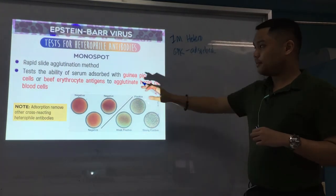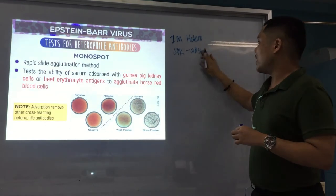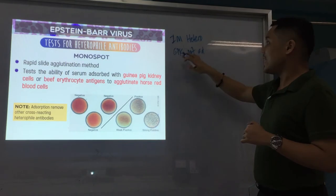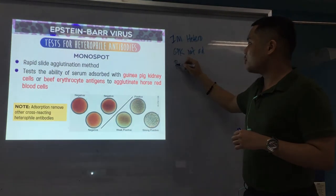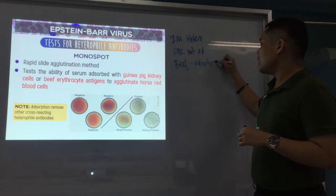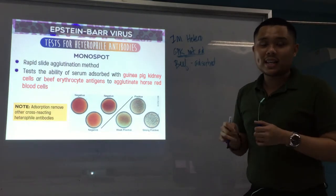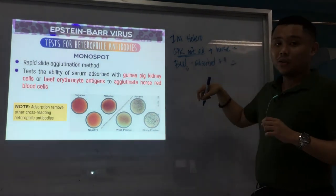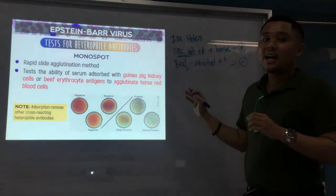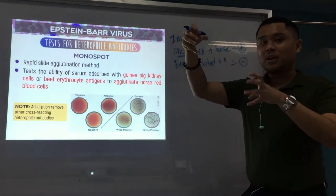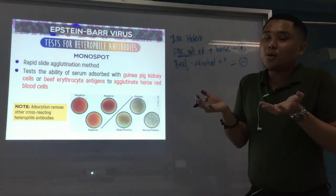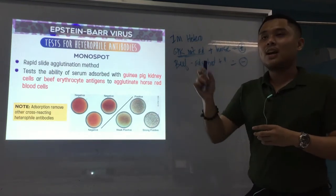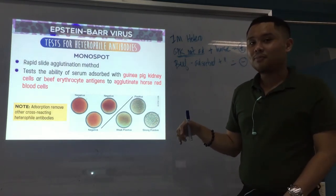Your IM heterophil antibodies cannot be absorbed by the guinea pig kidney cells, but they can be absorbed by the BIF. Therefore, antibodies remain — heterophil antibodies remain — so when horse RBCs are added, agglutination is expected in the guinea pig kidney cell portion. Positive there is agglutination. Whereas in the BIF, it is negative, because the antibodies were already absorbed by the BIF erythrocyte antigens, so there are no free antibodies left to agglutinate the horse RBCs. That's the characteristic of IM heterophil antibodies.